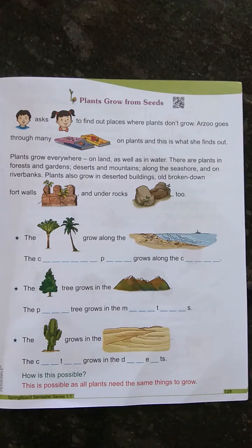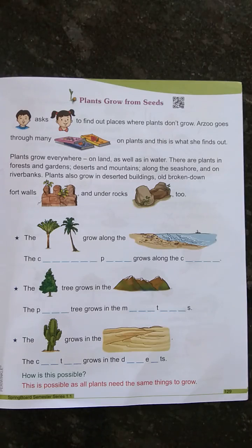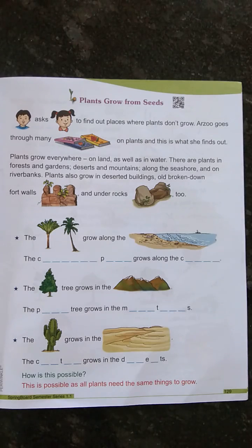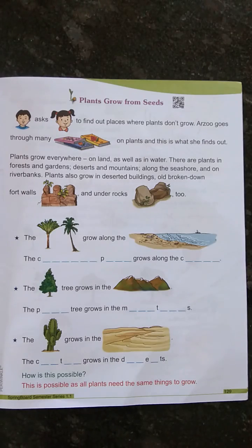Now we are going to study about plants that grow from seeds. Tell me, children — do all plants grow from seeds? No. Some plants grow from seeds and some plants grow from cuttings taken from the parent plant. For example, sugarcane and roses are grown by taking a cutting from the parent plant and planting it into the soil.